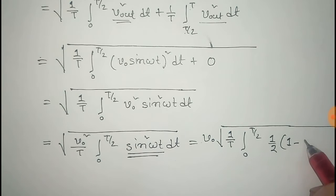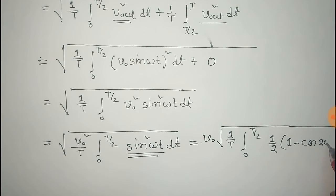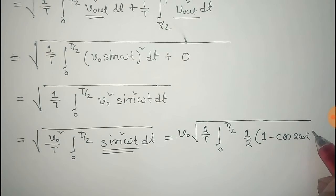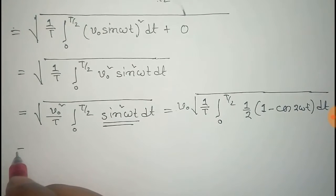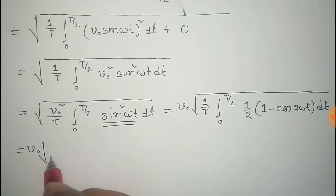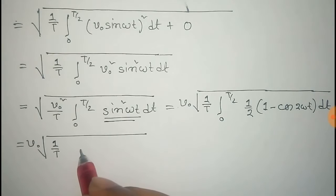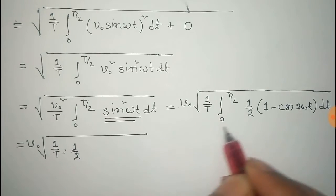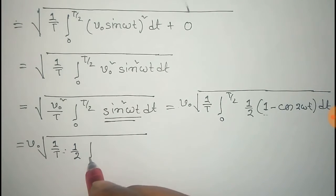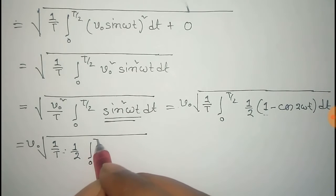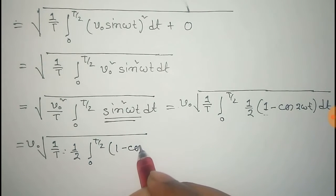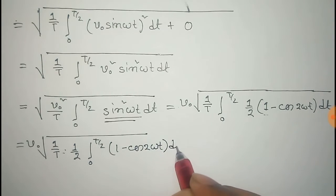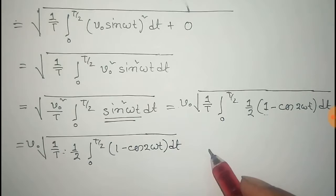We can write sin²(ωt) as ½(1 − cos(2ωt)). This gives V₀ times the square root of (1/T), and since ½ is also a constant it comes out of the integral, leaving the integral from 0 to T/2 of (1 − cos(2ωt)) dt.